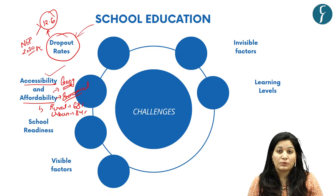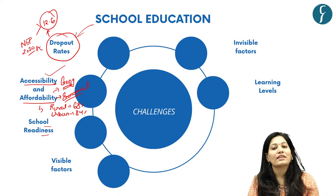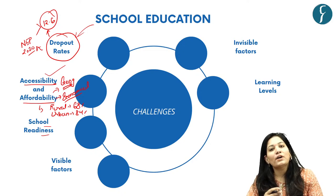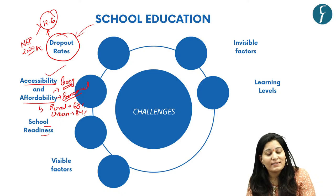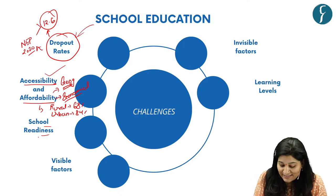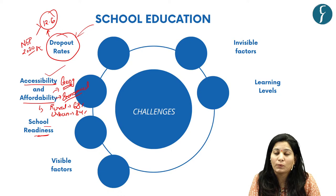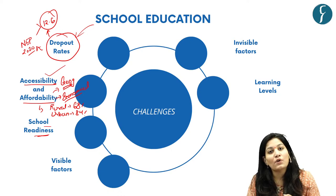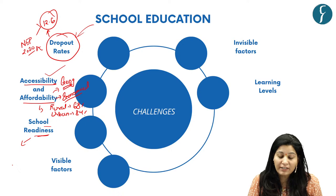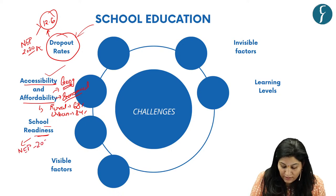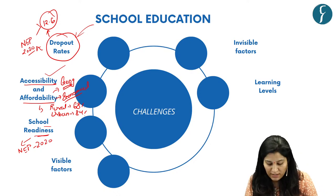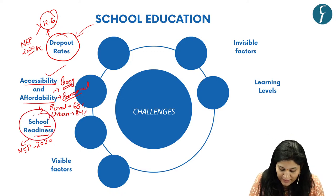The third issue is the school readiness index. The foundation years of early education set the base for later academic learning. However, reports reflect that India's early readiness index for children of age five is quite below the expected level. That is why the Indian government through NEP came up with the idea to include pre-primary education into the formal education setup.